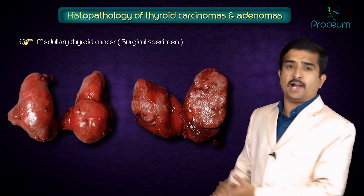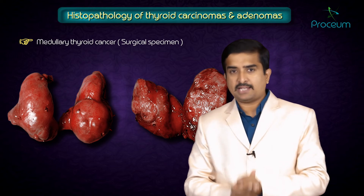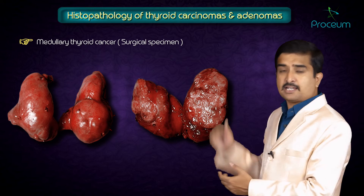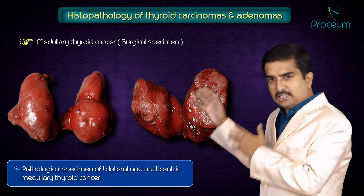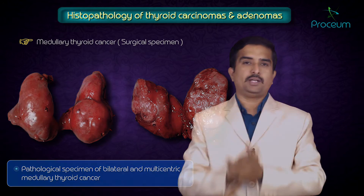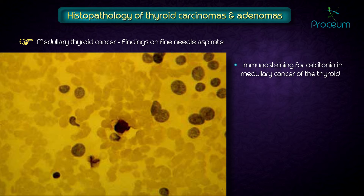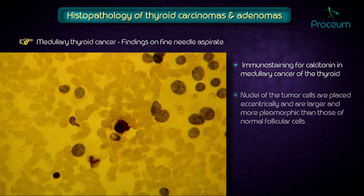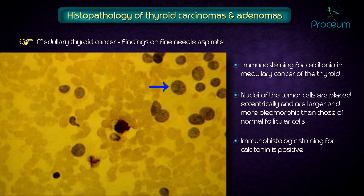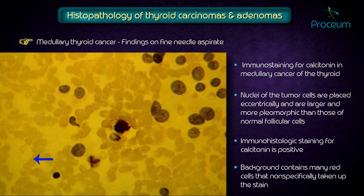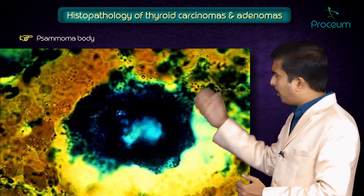An important image to identify is medullary thyroid cancer on a surgical specimen. This is a pathological specimen of bilateral and multicentric medullary carcinoma of the thyroid. On fine needle aspirate with immunostaining for calcitonin, the nuclei of the tumor cells are placed eccentrically and are larger and more pleomorphic than normal follicular cells. Immunohistologic staining for calcitonin is positive, shown by brown staining at the arrow marks.